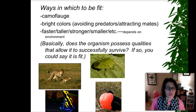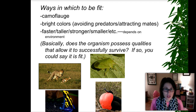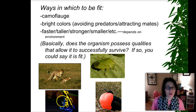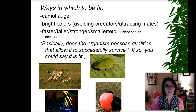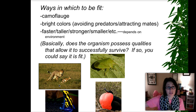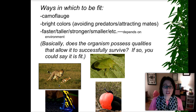Bright colors are another fitness trait. This poison dart frog uses its bright colors to tell predators 'I'm poisonous, you don't want to eat me.' There are actually organisms that have evolved to mimic those bright colors so that predators avoid them as well, even though they may not be poisonous. We also have organisms that are faster, taller, stronger, or smaller depending on their environment. Whatever physical traits allow them to be better suited to their environment and survive to pass on those traits are going to be considered fit — basically, does that organism possess qualities that allow it to successfully survive?